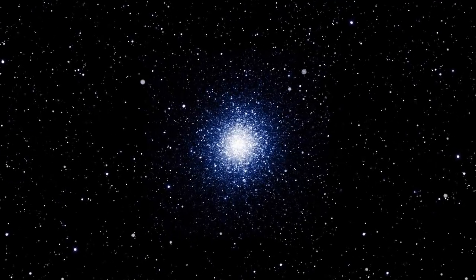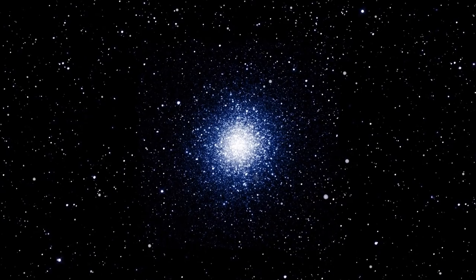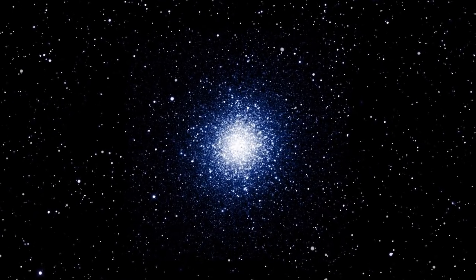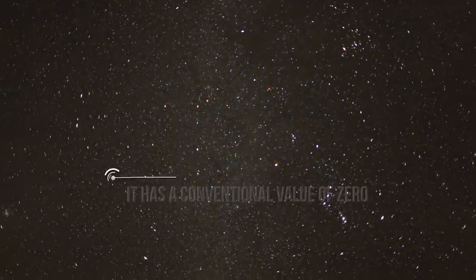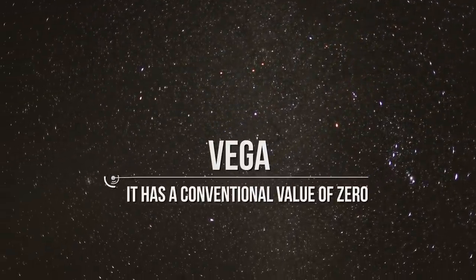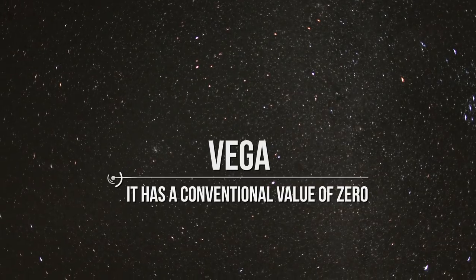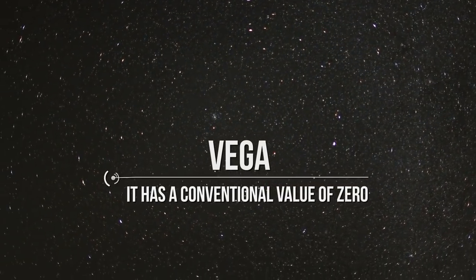In parallel, physicists defined apparent magnitude which is greater when luminosity is lower and smaller when luminosity is higher. As a matter of fact, the brightest star visible from Earth, which is known as Vega, has a conventional value of zero.